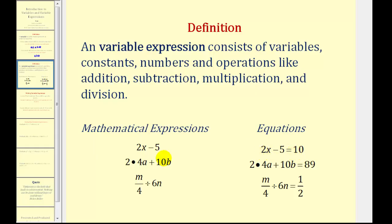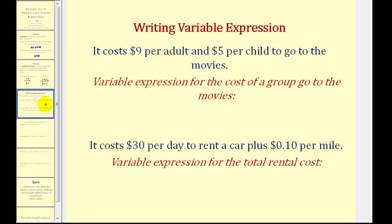The main thing to remember is expressions don't have equal signs, and equations do. Now, let's talk about writing variable expressions. Let's say a group of you and your friends want to go to the movies, and it costs $9 per adult and $5 per child to go to the movies.